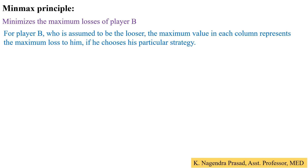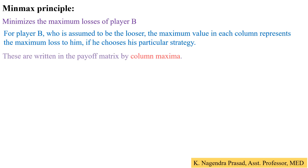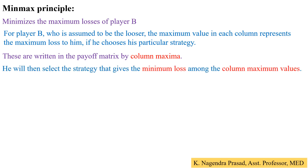For player B, who is assumed to be the loser, the maximum value in each column represents the maximum loss to him if he chooses that particular strategy. In the payoff matrix, columns represent player B's strategies and represent losses for that player. So player B selects the maximum losses per column, and among those maximum losses, minimizes the loss. These are written in the payoff matrix as column maxima, and player B selects the strategy giving the minimum loss among the column maxima values.